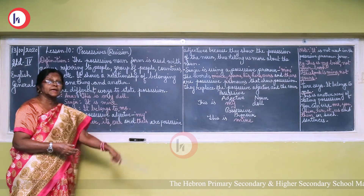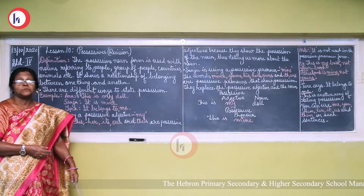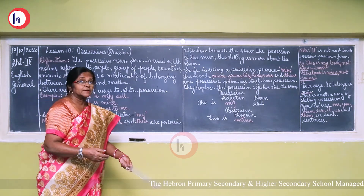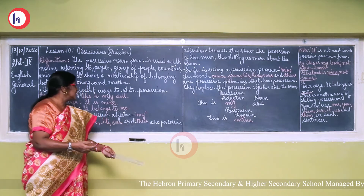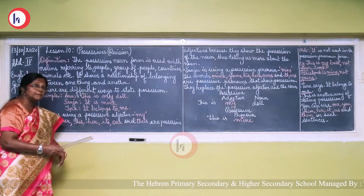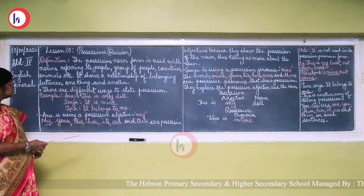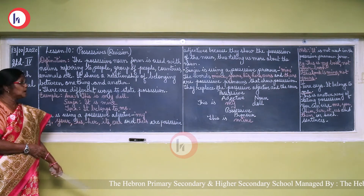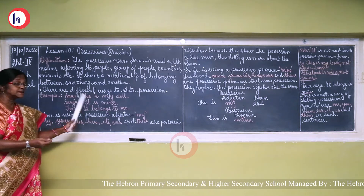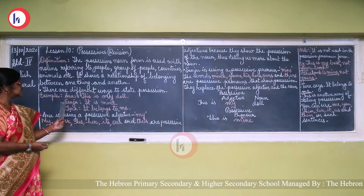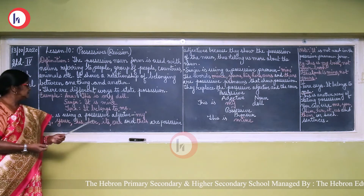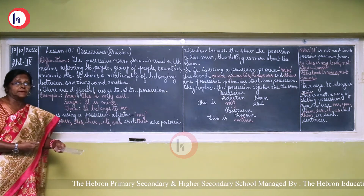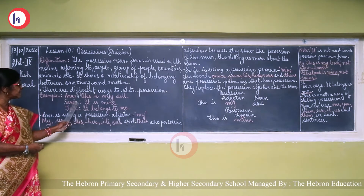There are different ways to express possession — not just one way, but different ways. Here are some examples. Anu says, 'This is my dog.' Sanju says, 'It is mine.' And Tara says, 'It belongs to me.' So the same idea is expressed in three different ways.